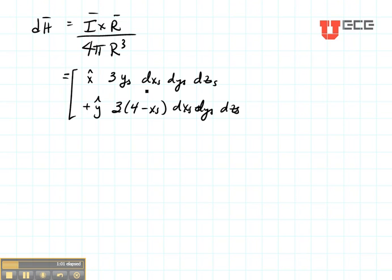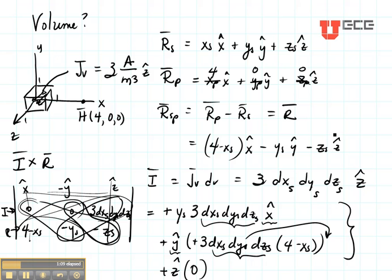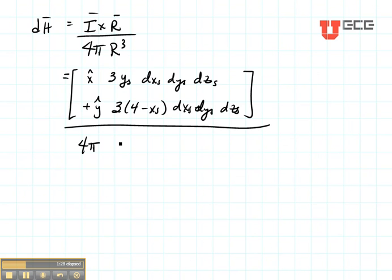Take this whole part divided by 4π and let's get R cubed. R is the vector R. So the magnitude of vector R is (4 minus XS) squared plus YS squared plus ZS squared, all square rooted. Now it's all square rooted but it's going to be cubed.